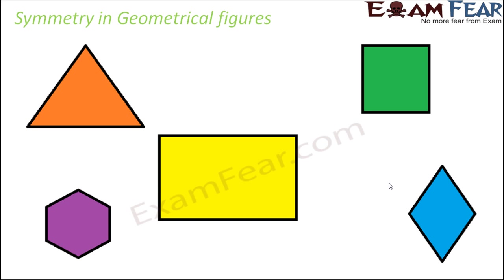Let's start with the triangle. In the case of the triangle, we have a vertical line of symmetry because it divides it into two equal halves. How about a horizontal line of symmetry? Well, it doesn't have a horizontal line of symmetry, but it definitely has a vertical line of symmetry.